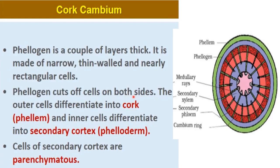The outer cells of cork cambium differentiate into cork, also called phellem. As you can see in the diagram, this is phellogen or cork cambium. On its outer side it is forming a layer of phellem — that is cork. On its inner side it forms secondary cortex, also called phelloderm — this blue-colored portion in the diagram formed on the inner side of phellogen is phelloderm or secondary cortex.